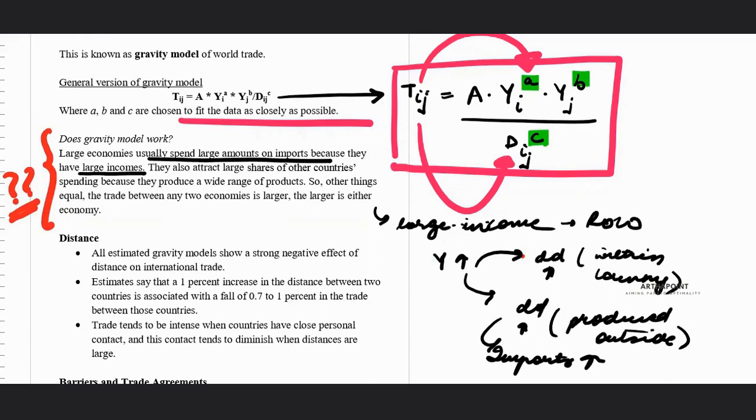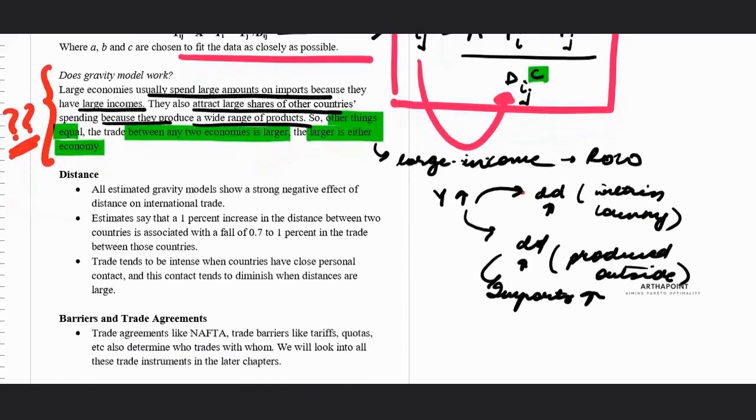So this is what has been seen. It has also been seen that when you transact with the rest of the world, you get more trade from countries which have higher GDP. So other things holding constant, trade between two economies is larger, larger is either of the economy.